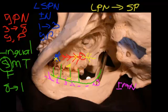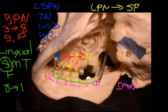The good news is that if we have to give the technically demanding inferior alveolar nerve block, when you give that injection you will get the lingual nerve nine times out of ten at the same time, because the inferior alveolar nerve and the lingual nerve run very close to each other as they rise up from the mandibular foramen.